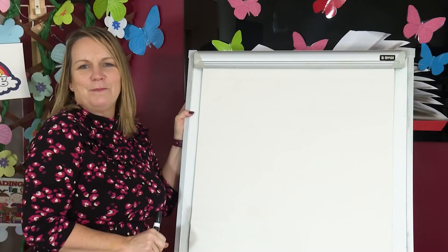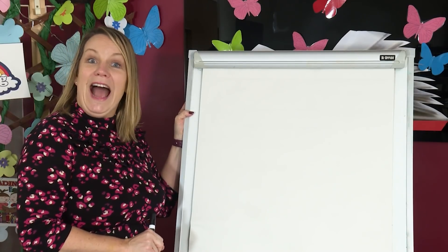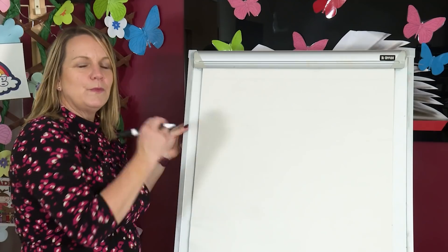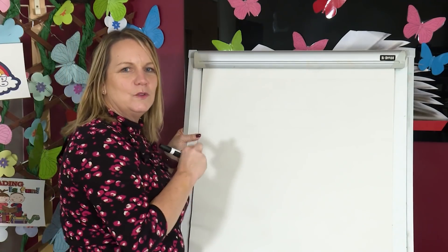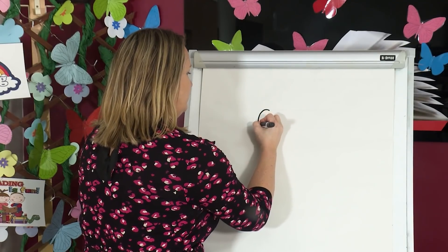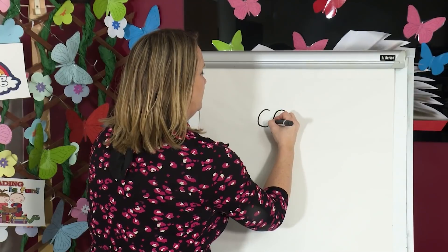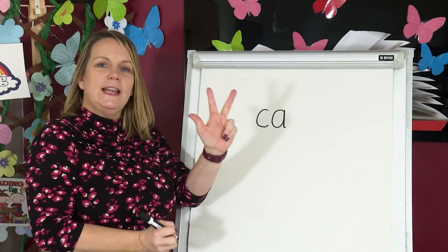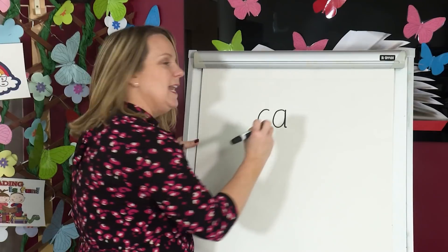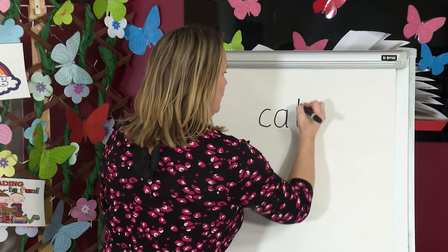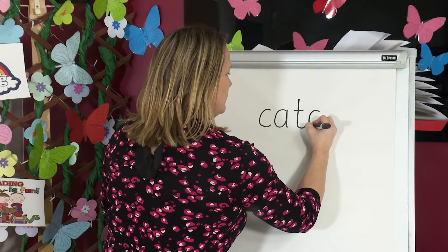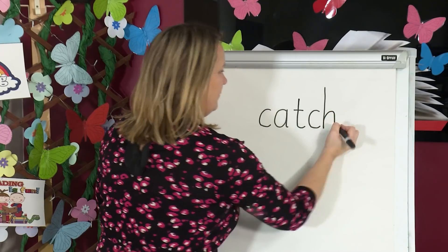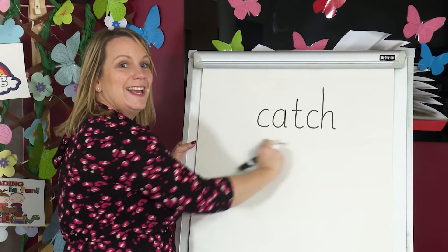Let's spell catch. Segment the sounds with me. Catch. Let's count how many sounds there are: c, a, tch. That's three sounds. Watch me write catch with three sounds. C, a, tch. Tch is a trigraph — three letters, one sound. So I need to write three letters. Catch. C, a, tch. Catch.